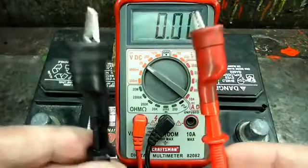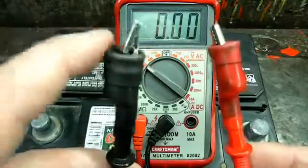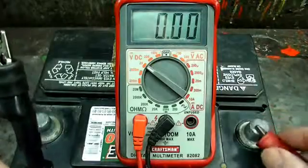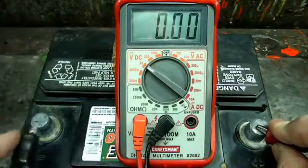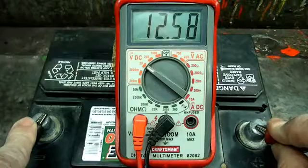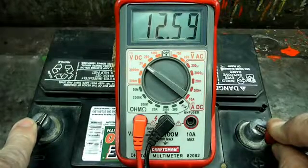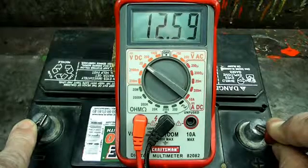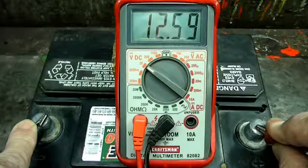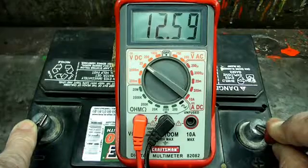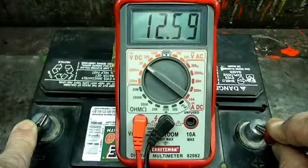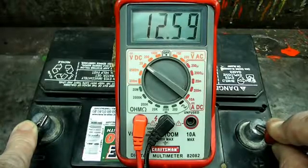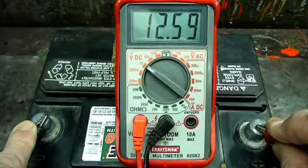Now on your multimeter you'll have two leads. The black lead will go to the negative, and the red will go to the positive. And once we put it on the battery we can read the voltage. And in this case we have 12.59 volts. So that's all there is to using the voltage DC scale.